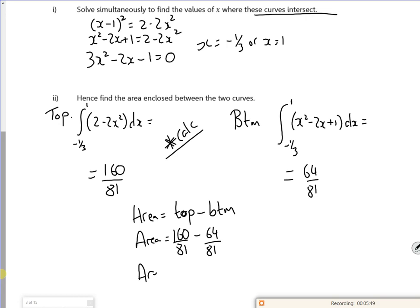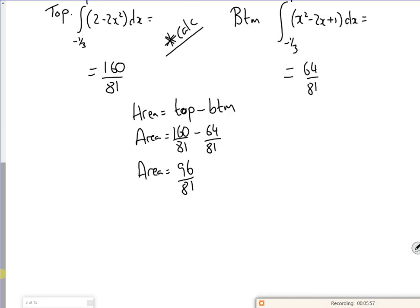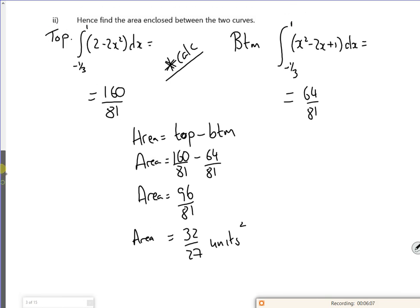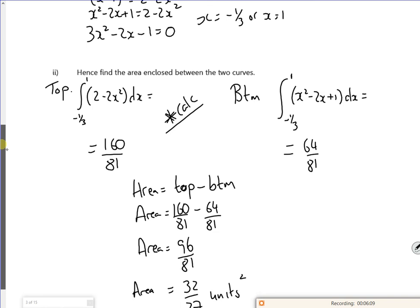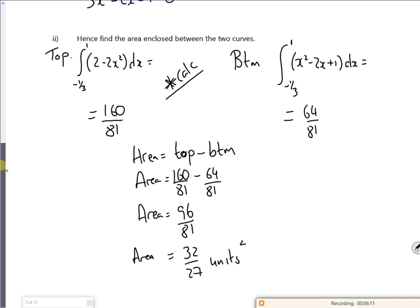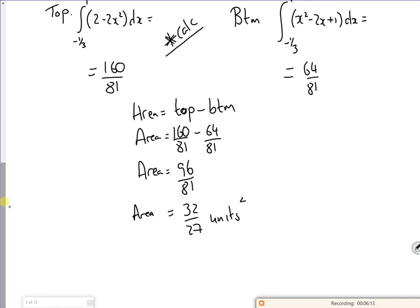So 160 over 81 minus 64 over 81. What's that, 96, isn't it? 96 over 81. Which cancels down now, I can divide through by 3. It gives me 32 over 27 units squared, because it's an area. So I did the two integrations separately, snuck it on the calculator because it didn't tell me to justify it. And got it right.